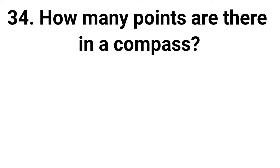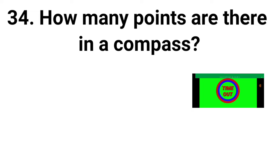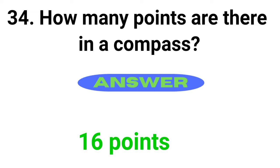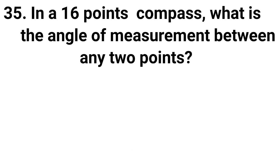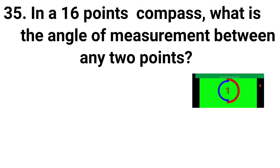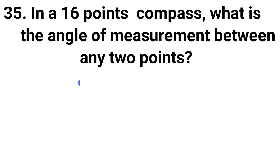Question 34: How many points are there in a compass? Answer is 16 points. Question 35: In a 16 points compass, what is the angle of measurement between any two points? Answer is 22.5 degrees.